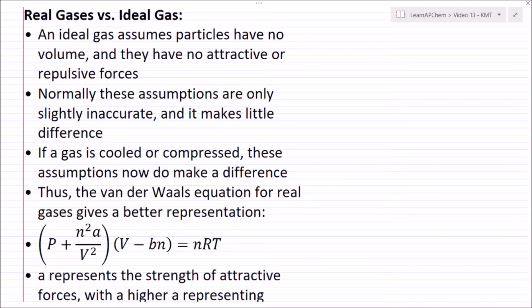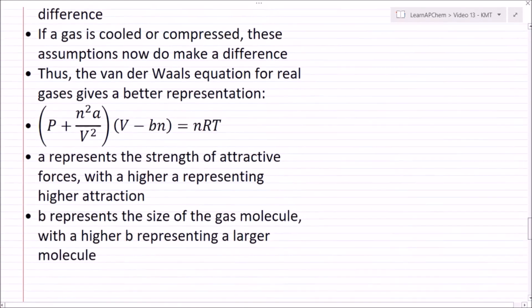And thus we end up with the van der Waals equation for real gases, and this is P plus n squared times a over V squared times the quantity V minus bn equals nRT. Now a here represents the strength of our attractive forces, and a higher a means that there's more attraction.